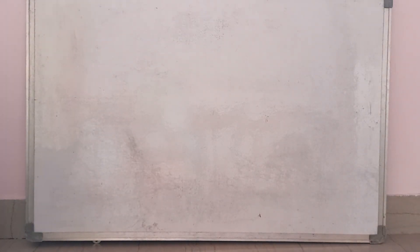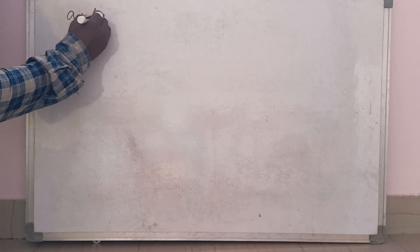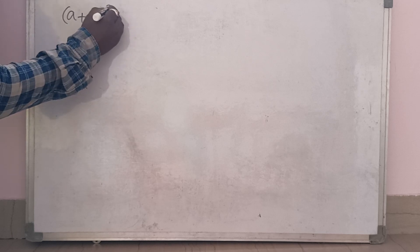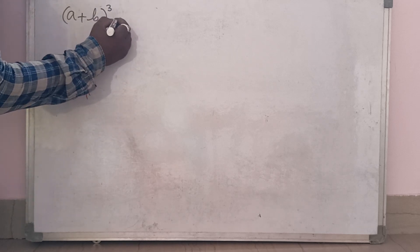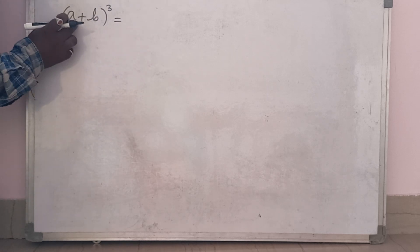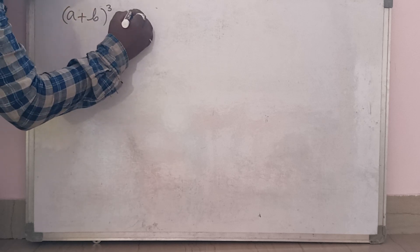Good morning everyone, I am AGM. Today we will solve and derive the a plus b whole cube formula. So a plus b whole cube — a plus b whole cube means I should write this bracket three times.